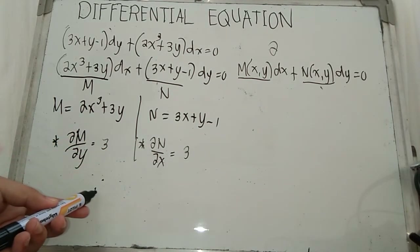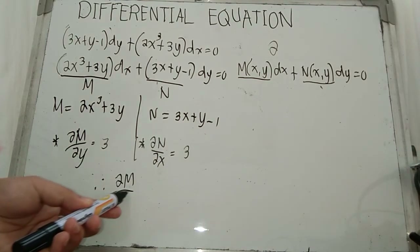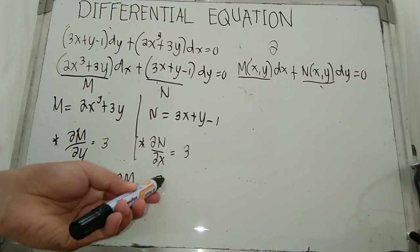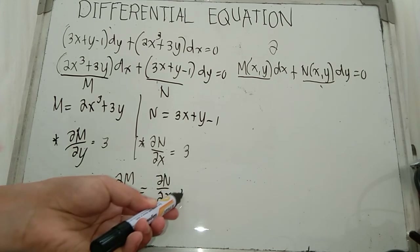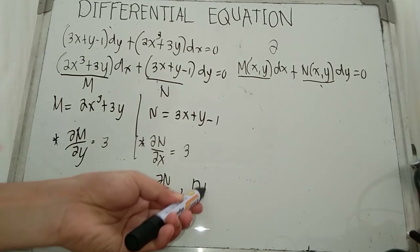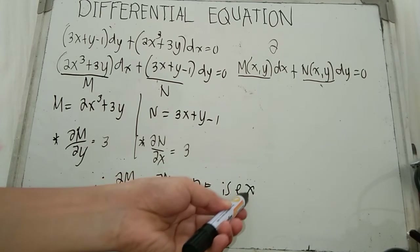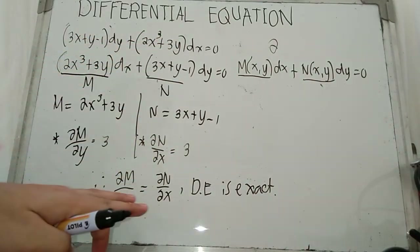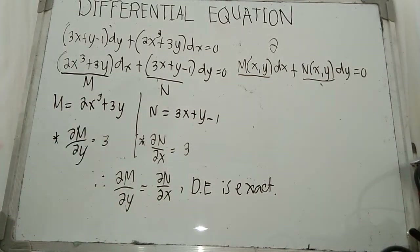Are they the same? Yes. Therefore, the partial derivative of M with respect to y equals the partial derivative of N with respect to x, and we conclude that the given differential equation is exact. The given differential equation is exact because both partial derivatives of functions M and N are the same. Thank you for watching!